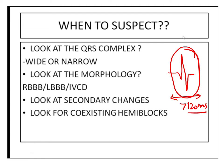When the QRS complexes are wider than 120 milliseconds or more than three small squares, and when the width is less than 120 milliseconds, we call them incomplete bundle branch blocks. If the width is more than 120 milliseconds, we call them complete bundle branch blocks.